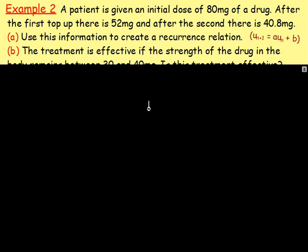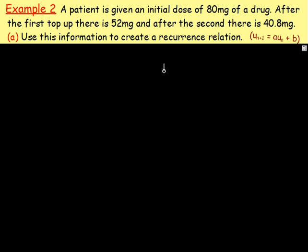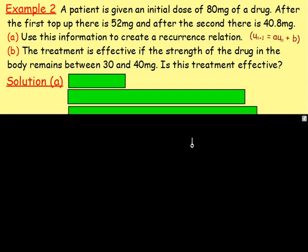A patient is given an initial dose of 80 milligrams of a drug. After the first top up there is 52 milligrams, and after the second top up there is 40.8 milligrams. Use this information to create a recurrence relation of the form U(n+1) equals A·U(n) plus B. For part B, the treatment is effective if the strength of the drug in the body remains between 30 and 40 milligrams — is this treatment effective?